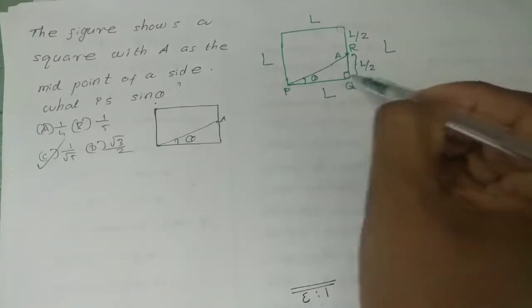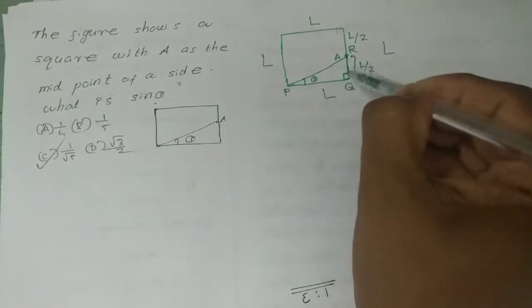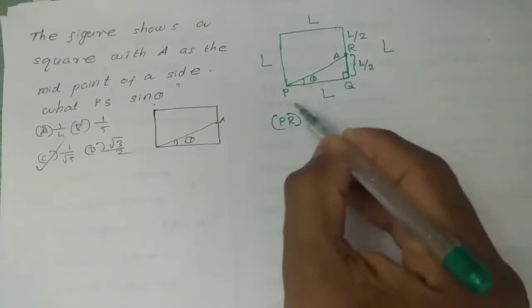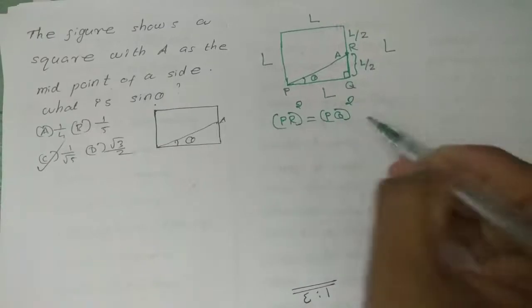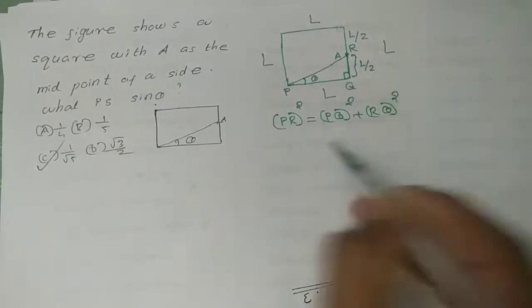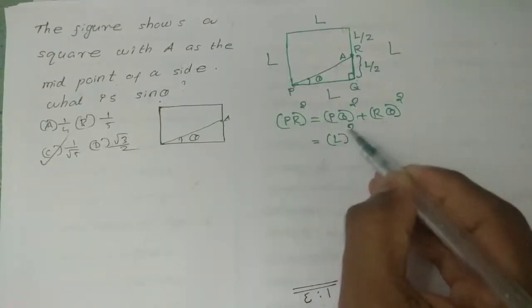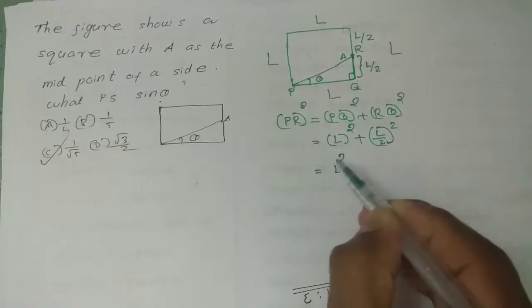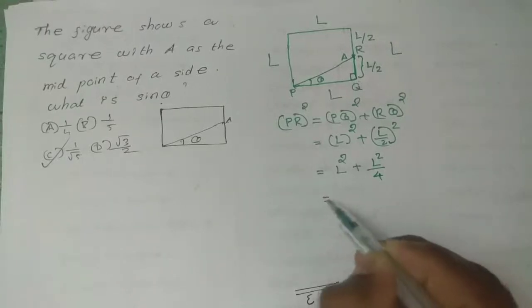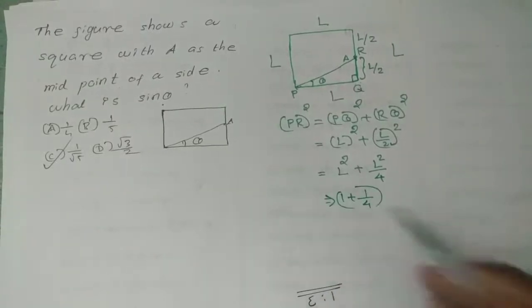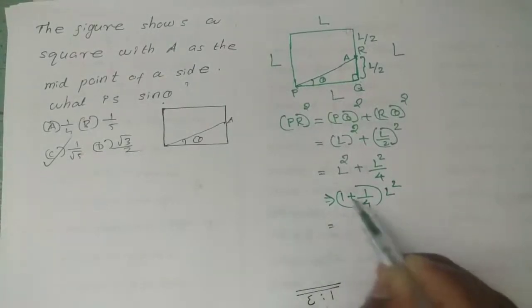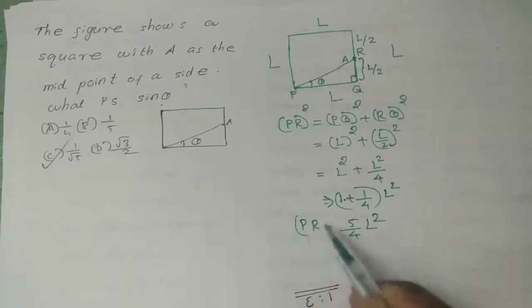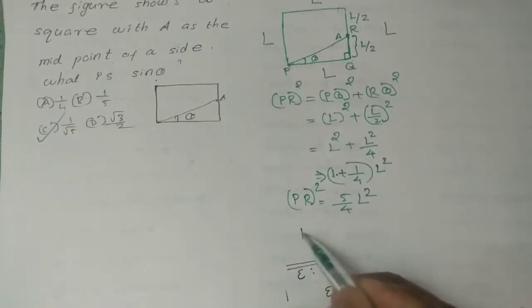The distance is L by 2, L by 2. Now finding PQ square. PQ square equals L by 2 square plus L square. This equals L square divided by 4 plus L square, which is L square times (1/4 + 1), equals 5L square divided by 4.